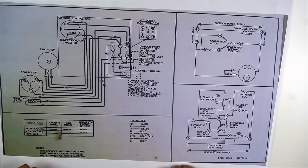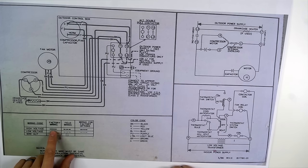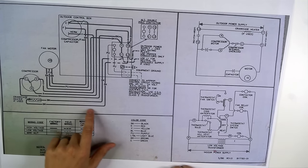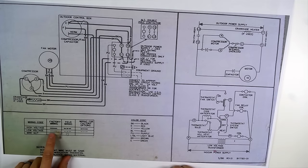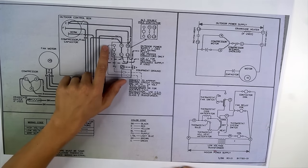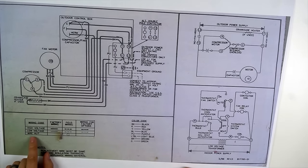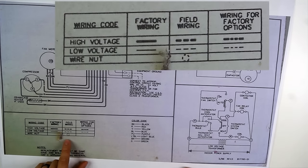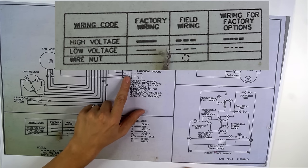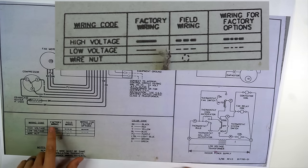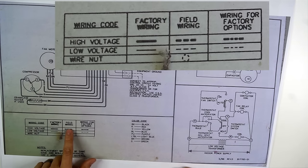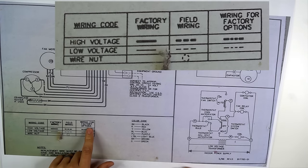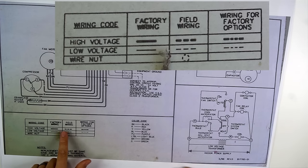You've got your wiring codes. High voltage wires are going to be thick bold lines, like right here. The thinner lines are going to be our low voltage lines, like right over here going to the contactor coil. A wire nut will be symbolized as a circle made out of dashed lines — there are only two of those wire nuts in the whole diagram. The second column says field wiring and the third says wiring for factory options, both shown as dashed lines.